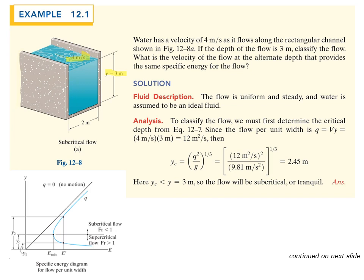Note that in many cases the problem gives big Q, the volumetric flow rate, and you would need to divide by the width B to get small q. In this example, plugging into the critical depth equation gives a critical depth of 2.45 meters. Since our current depth is 3 meters, which is above the critical depth, we are on the upper branch of the curve — the flow is subcritical or tranquil.